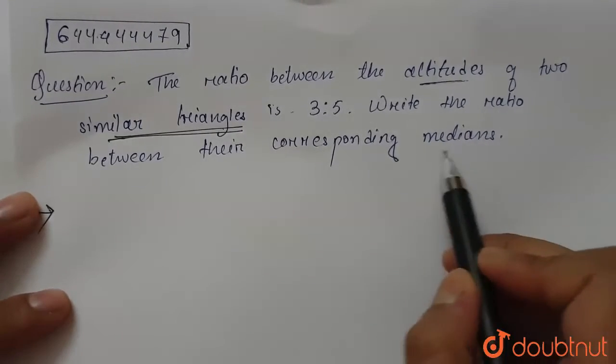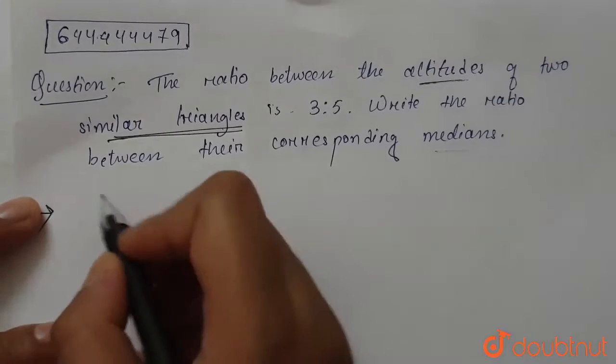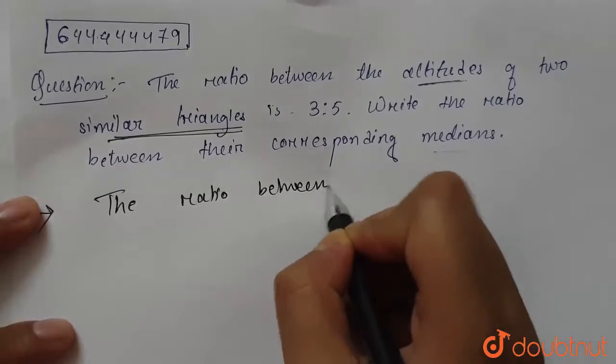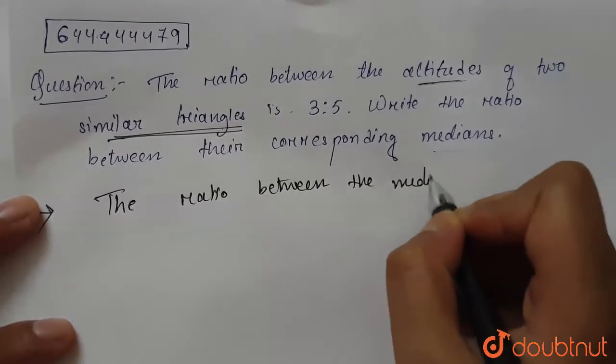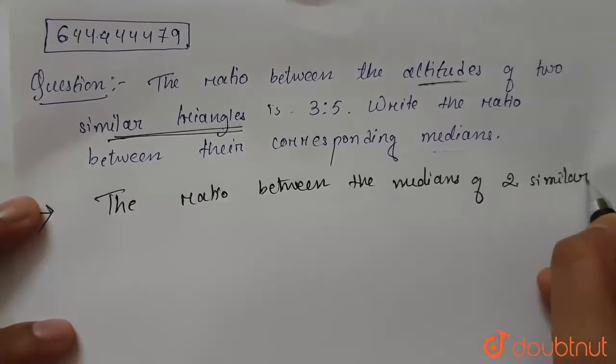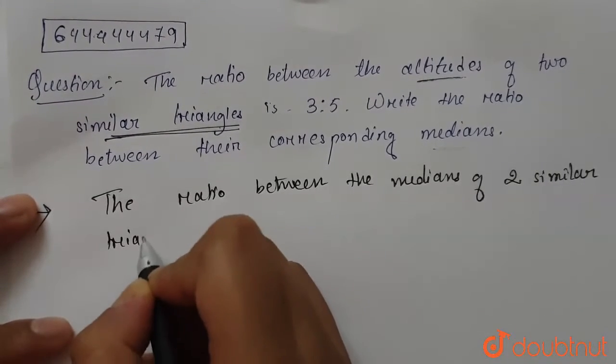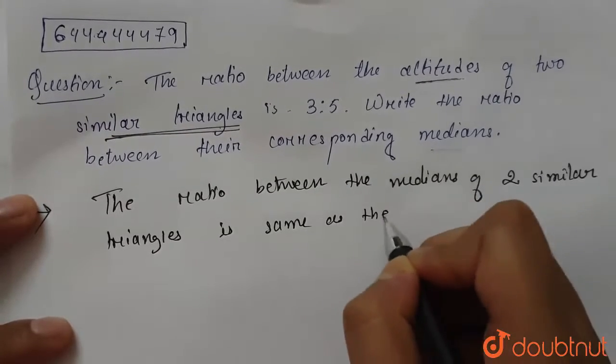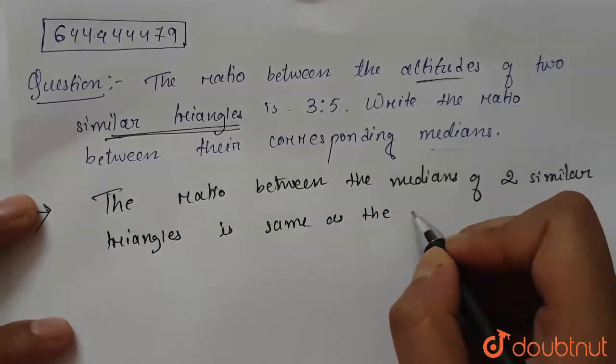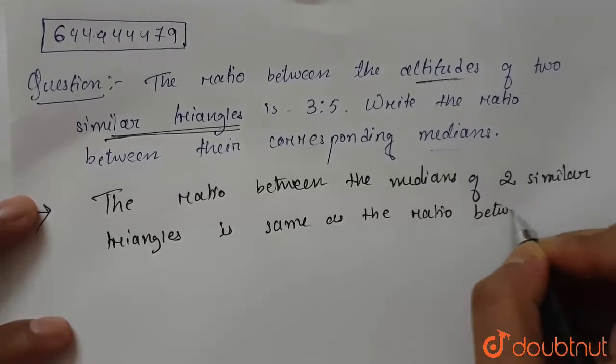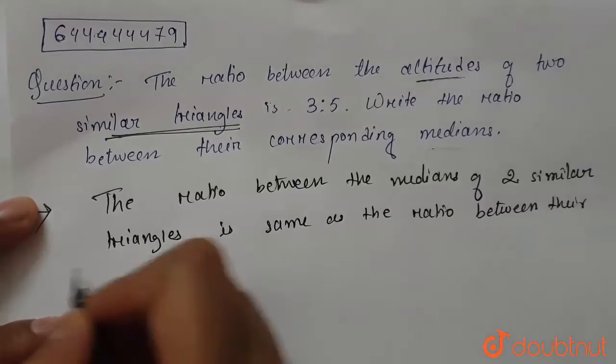So for the medians, for similar triangles, we know that the ratio between the medians of two similar triangles is the same as the ratio between their sides.